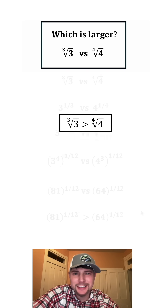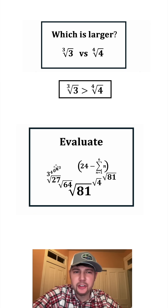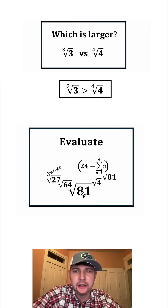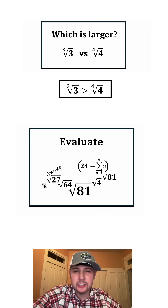This is the answer to our question — let's put a box around it. How exciting! And here's tomorrow's question: it's the cube root of 27, fourth root of 64, and related roots of 81, raised to the power of the square root of 4 to the power of 24 minus the sum from 1 to 6 of the nth root of 81. This looks like it'll be a fun one. How exciting!